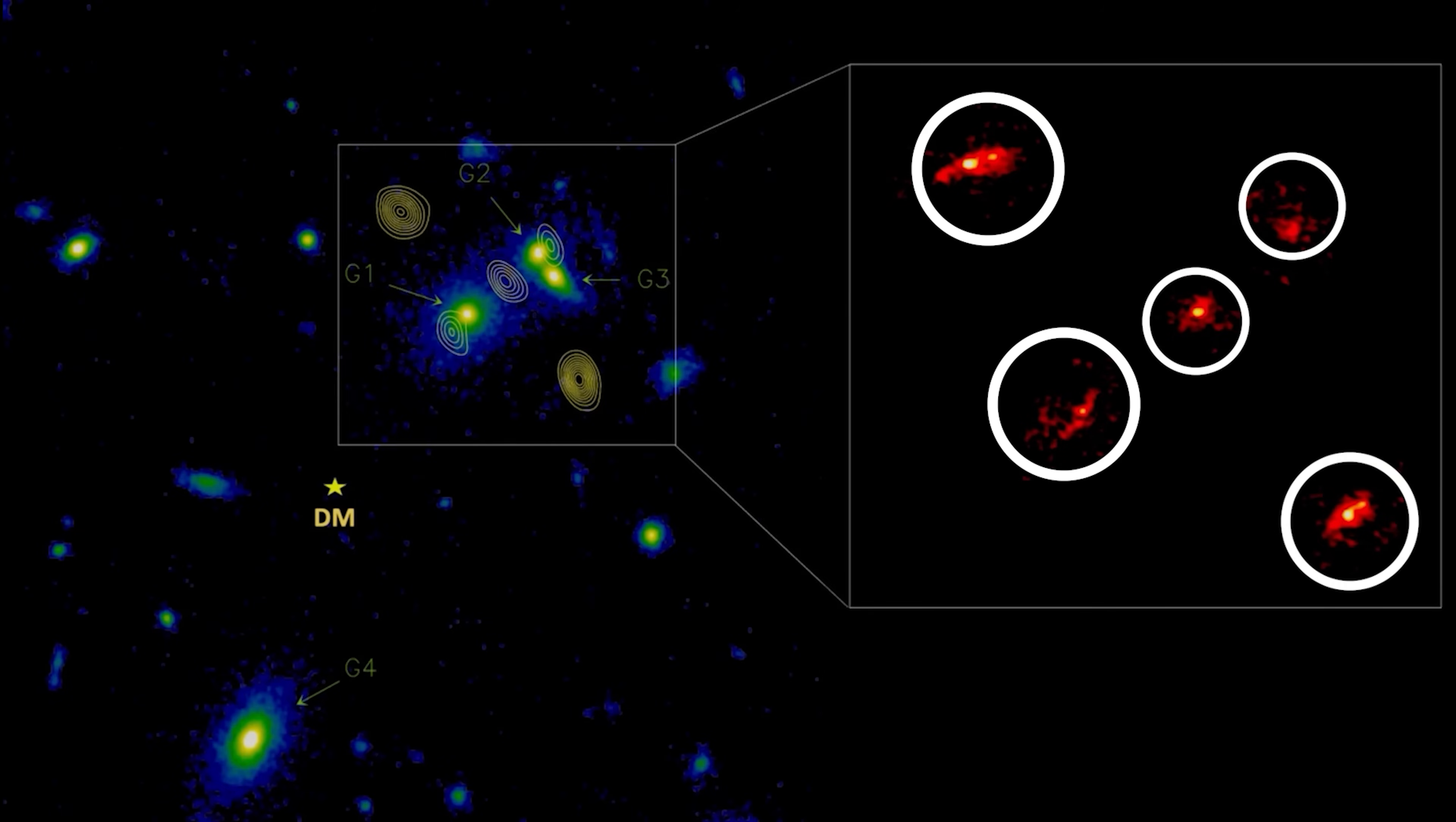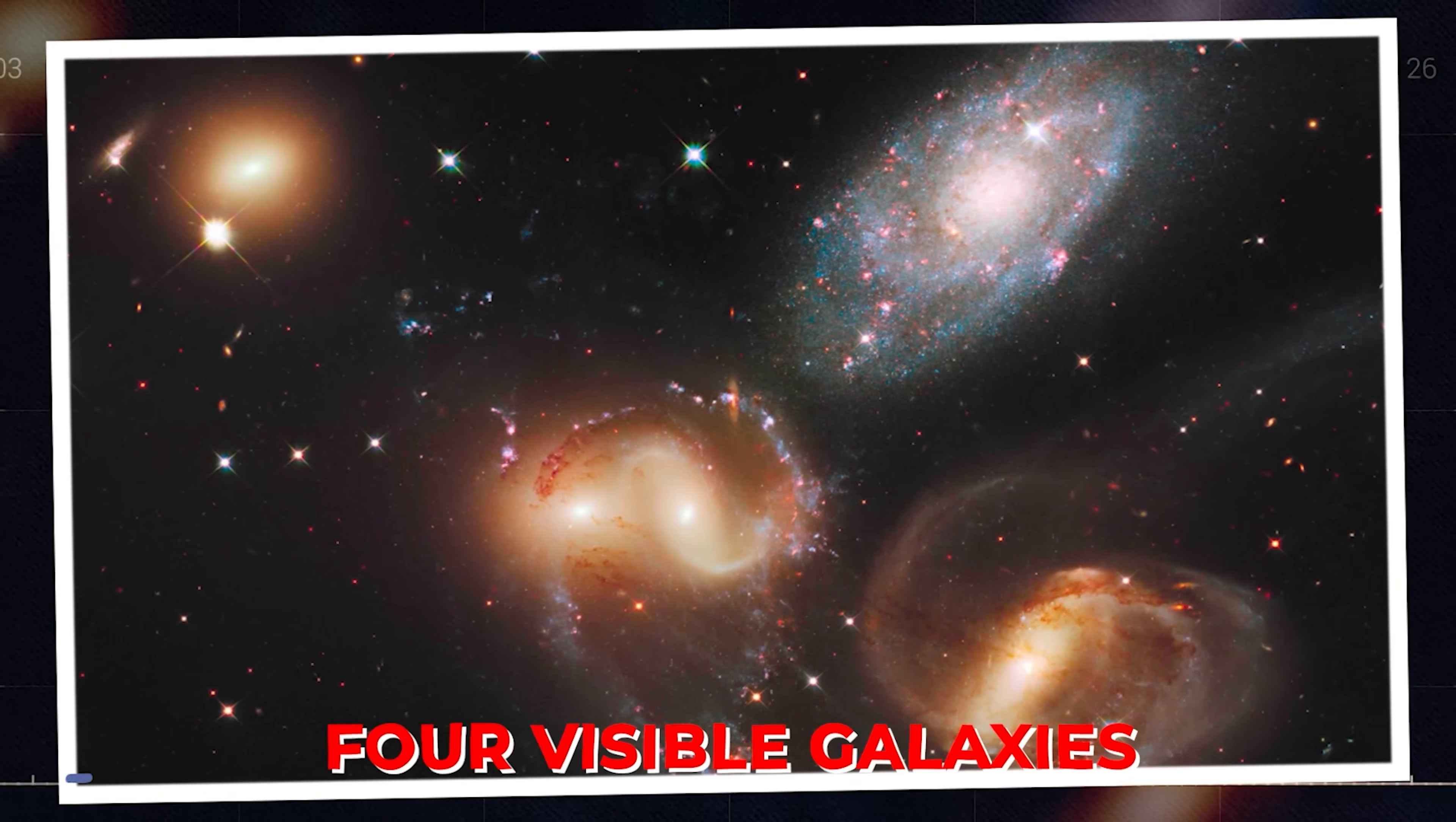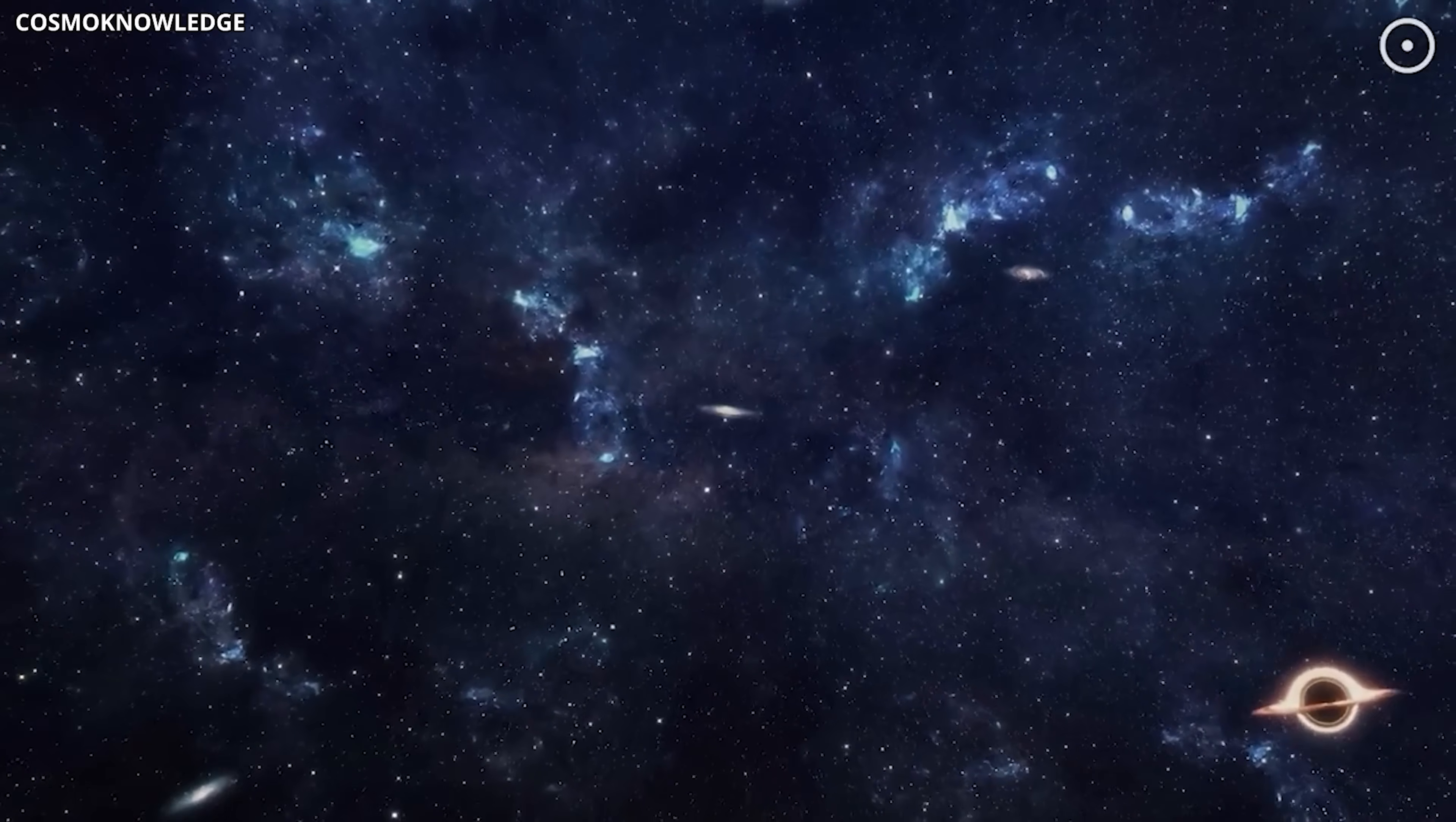Spectroscopic analysis verified that all five images came from the same galaxy, proving the fifth image was real. The puzzle deepened. The four visible galaxies in the foreground couldn't account for it. The team needed unseen mass to explain the anomaly.